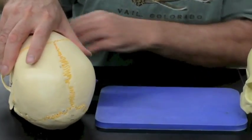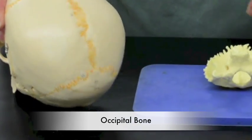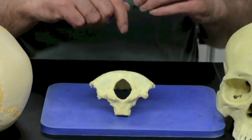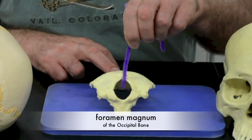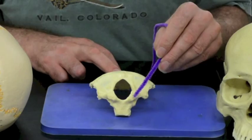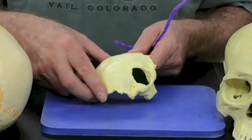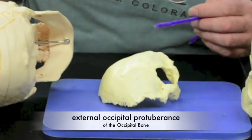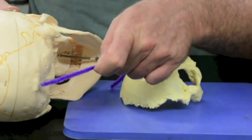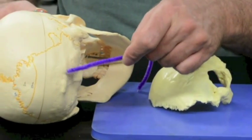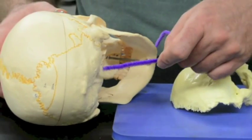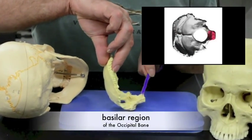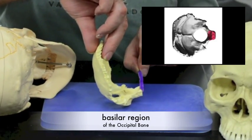At the base of the skull, we have the occipital bone. Its most distinguishing feature is the foramen magnum, where the spinal cord passes through. On each side of that, we have the occipital condyles. Then also, we have the external occipital protuberance, which can probably be better seen on this skull here. On each side of the external occipital protuberance, we have the superior nuchal line, and then a little bit lower down, we have the inferior nuchal line. We also have the basilar region, which is where the occipital bone articulates with the sphenoid bone.